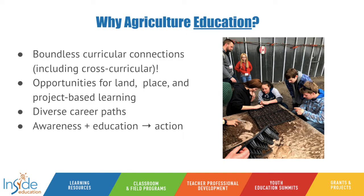The opportunities for bringing agriculture into the classroom are truly endless, with boundless curricular connections. Through a scientific lens, we can start as early as grade four, where the plant growth and changes and waste in our world units are great opportunities. Moving into junior high, we can look at agriculture through an interactions and ecosystems perspective, as well as in the plants for food and fiber unit in grade eight, the water unit, and grade nine biodiversity. Those are all great platforms for integrating agriculture education.